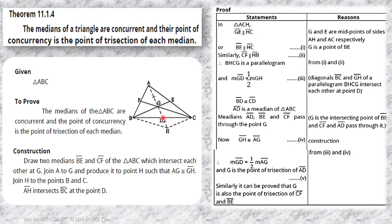GD equals half of GH because GD is congruent to DH — this is the diagonal property of the parallelogram. BC and AH are the two diagonals of parallelogram BHCG intersecting at D. Now, since D is the midpoint of BC, we have BD congruent to CD. Therefore, AD is a median of triangle ABC.